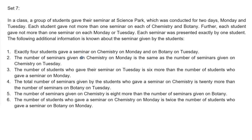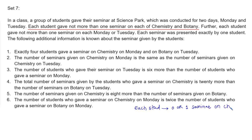In a class, a group of students gave their seminar at science park, which was conducted for two days — Monday and Tuesday. Each student gave not more than one seminar on each of chemistry and botany. This means each student gave 0 or 1 seminar on chemistry and 0 or 1 seminar on botany.